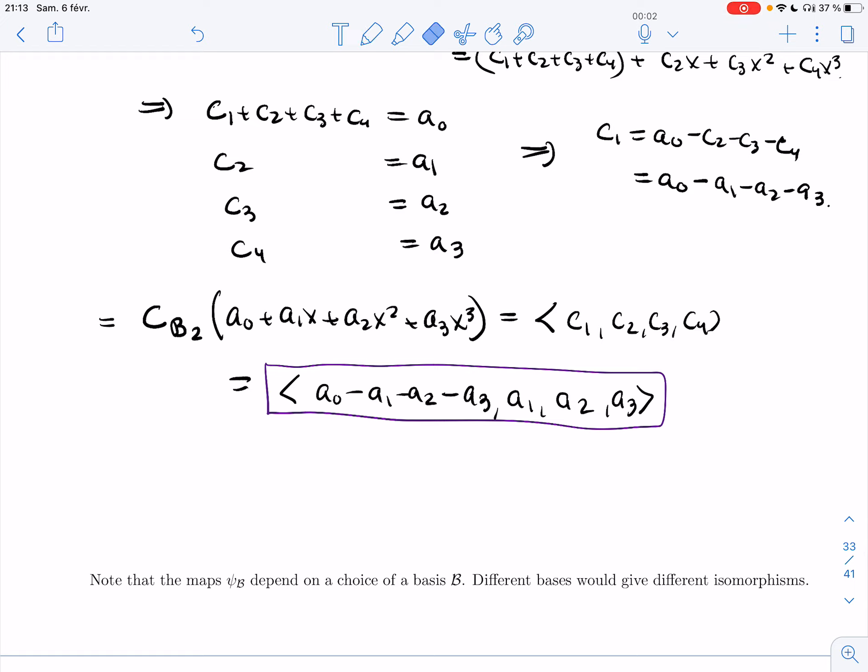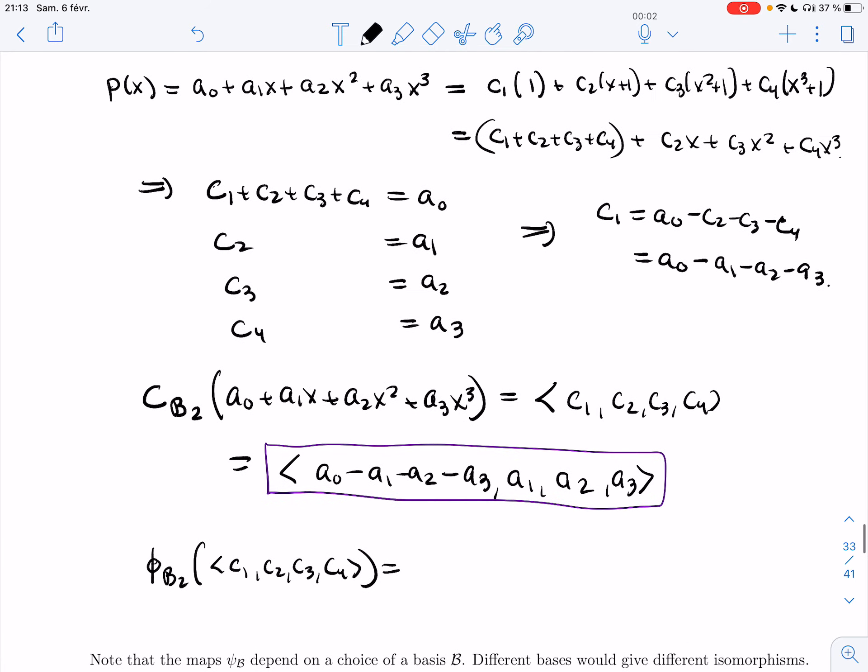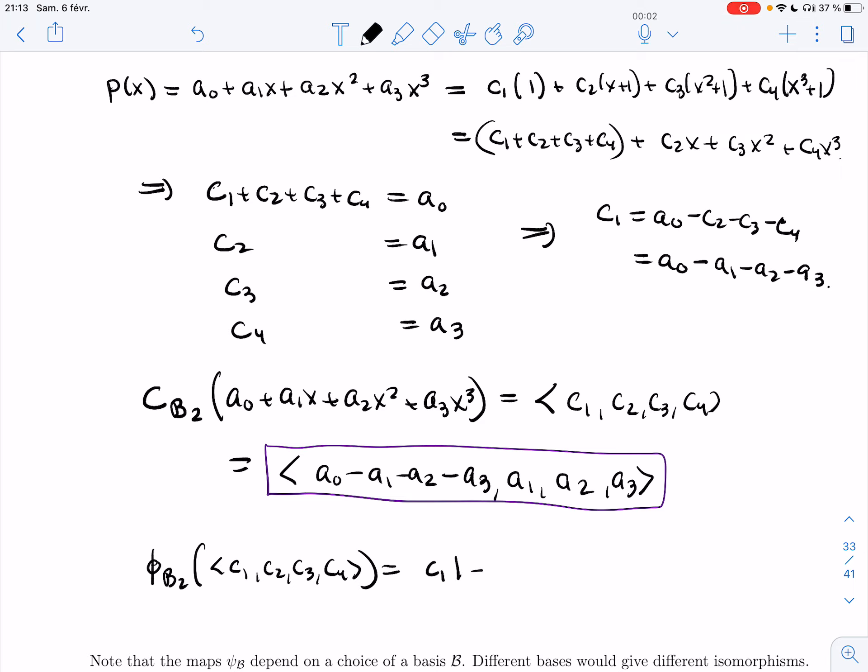So this is φ_B. And then ψ_B is going to take C₁, C₂, C₃, C₄, and just send it to C₁ times 1 plus C₂ times (x+1) plus C₃ times (x²+1) plus C₄ times (x³+1).